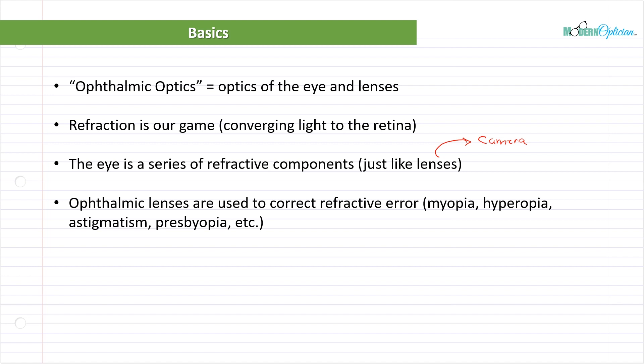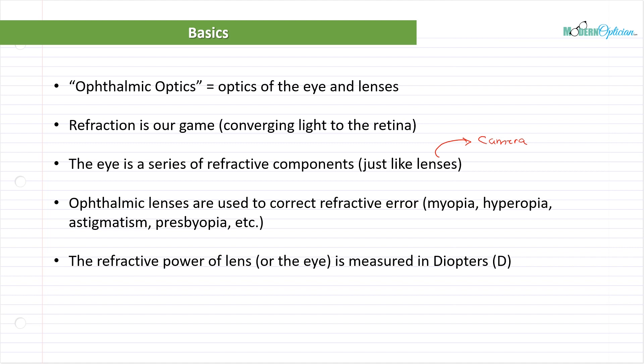Ophthalmic lenses are used to correct refractive error: myopia, hyperopia, astigmatism, presbyopia, and so on. We're going to go into much more detail on every single one of these things. The lenses that we use correct the deficiencies in the optics of the eye.